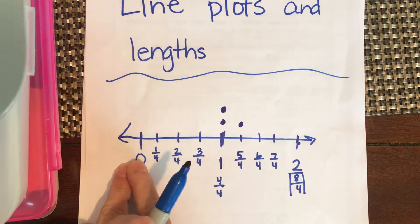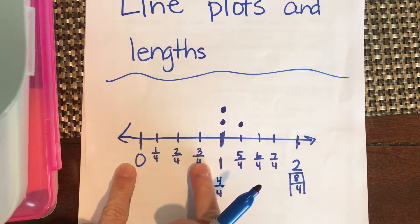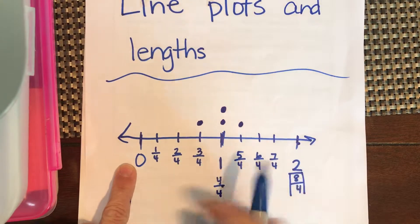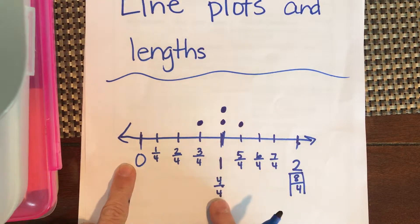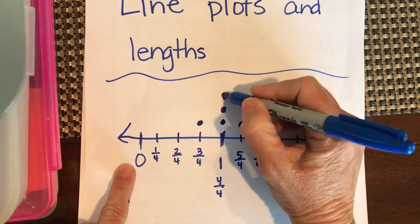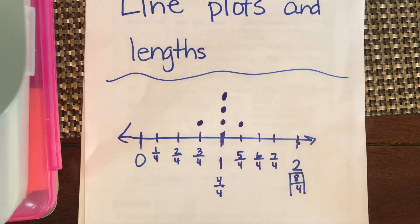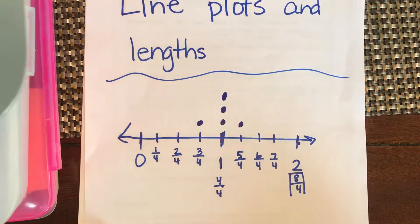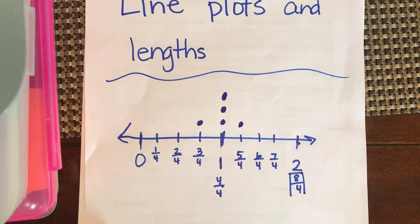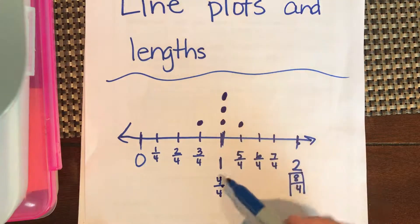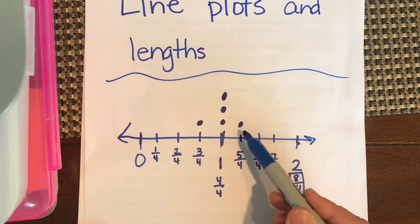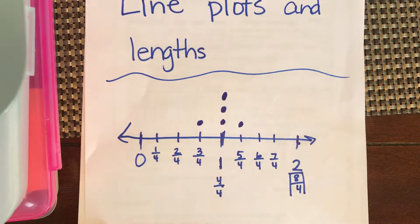The fourth pencil was three-fourths of an inch, and the fifth was four-fourths of an inch. So I can see I've measured five different pencils — each dot is a pencil length. Three pencils were exactly one inch, one was three-fourths, and one was five-fourths of an inch.